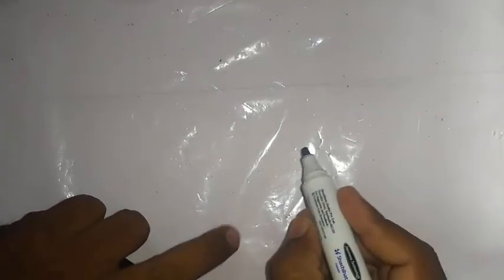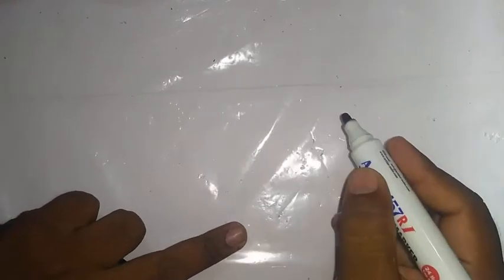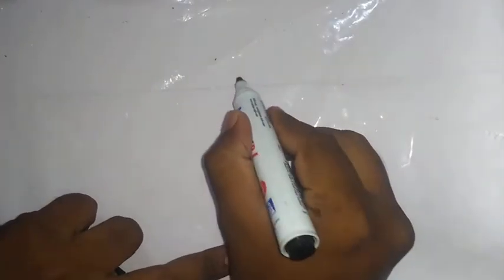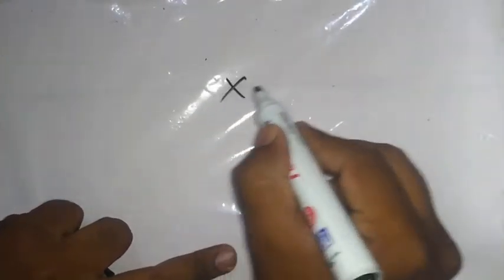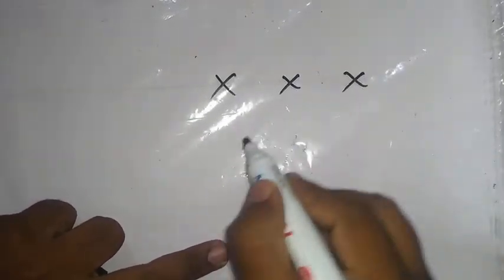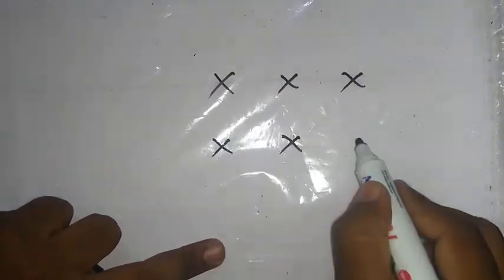Yes, my dear students, in this video we are deriving the expression for the radius of the circular path which is traced by the charged particle. Let us consider one uniform magnetic field — we are showing the figure.